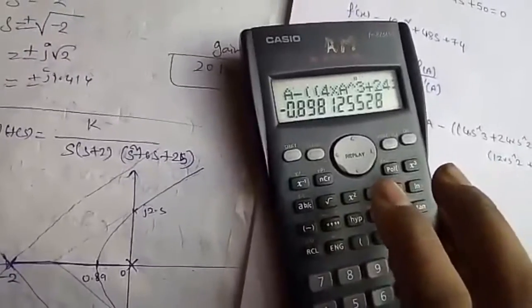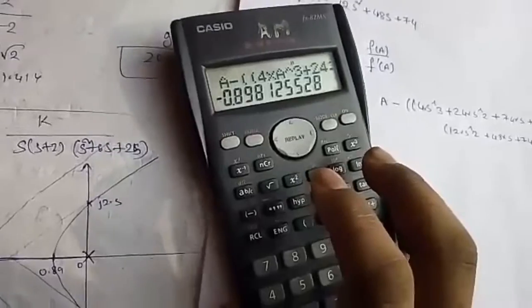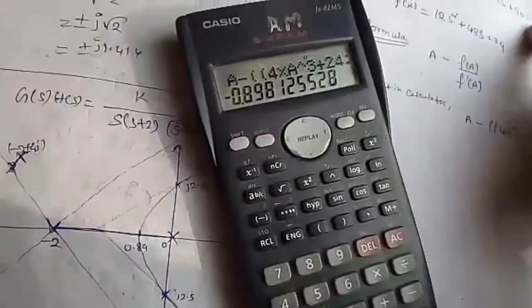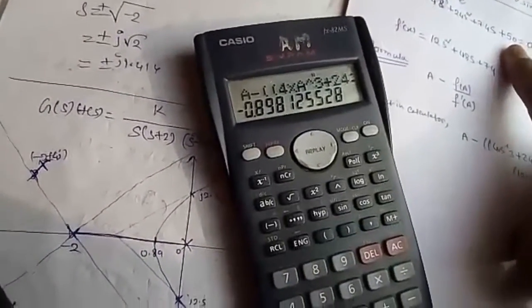Now you can see the value has become constant. The value of x for which the equation is equal to zero, one of the answers of the equation, is minus 0.89.